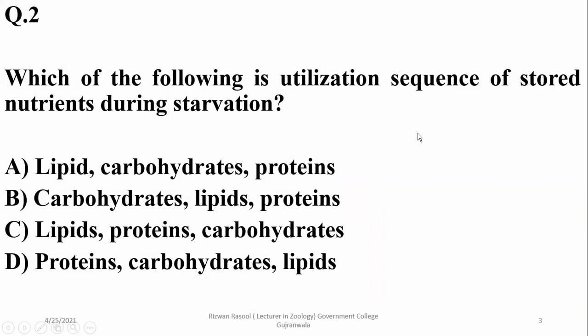First of all, if you are starving, you will make use of carbohydrate reserves, then lipids, and then proteins. So the right option is beta.